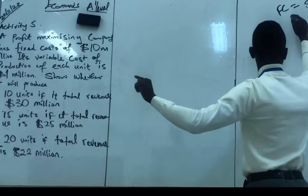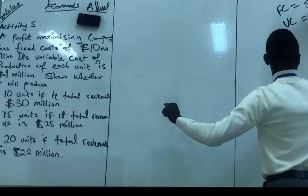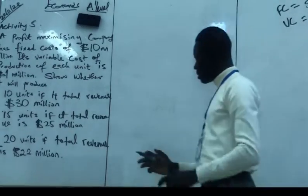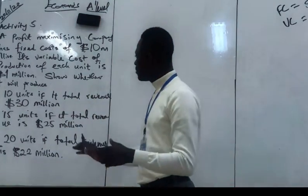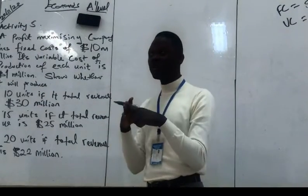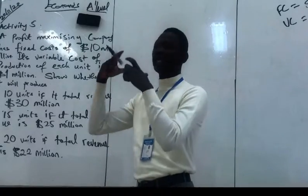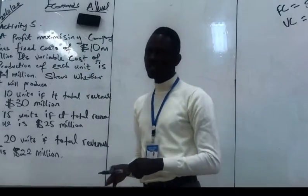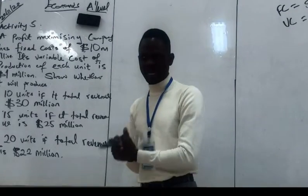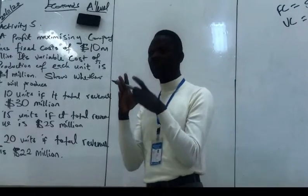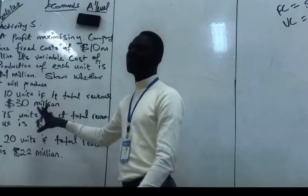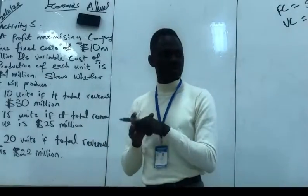And for each unit, there is a cost of 1 million for each unit. They want us to show this company that is a profit-maximizing company. What is it about a profit-maximizing company? We are talking about a company that has a greater revenue than its cost. So if this company that is a profit-maximizing company has this type of cost, this type of output, we need to be able to determine what the production will be, that's what the question is saying.